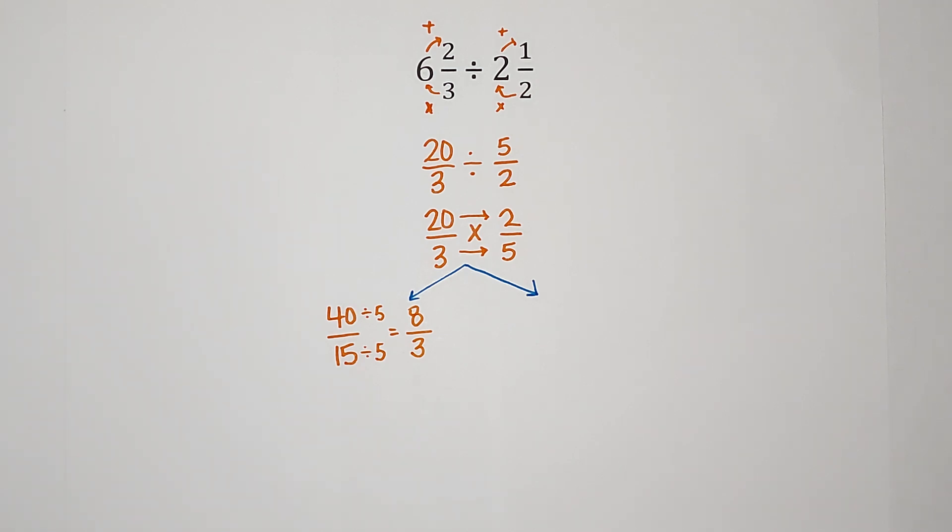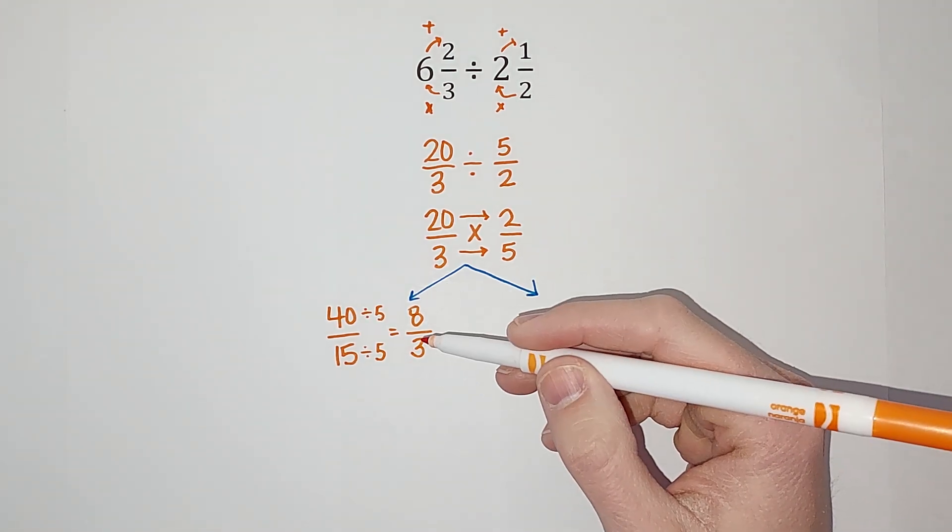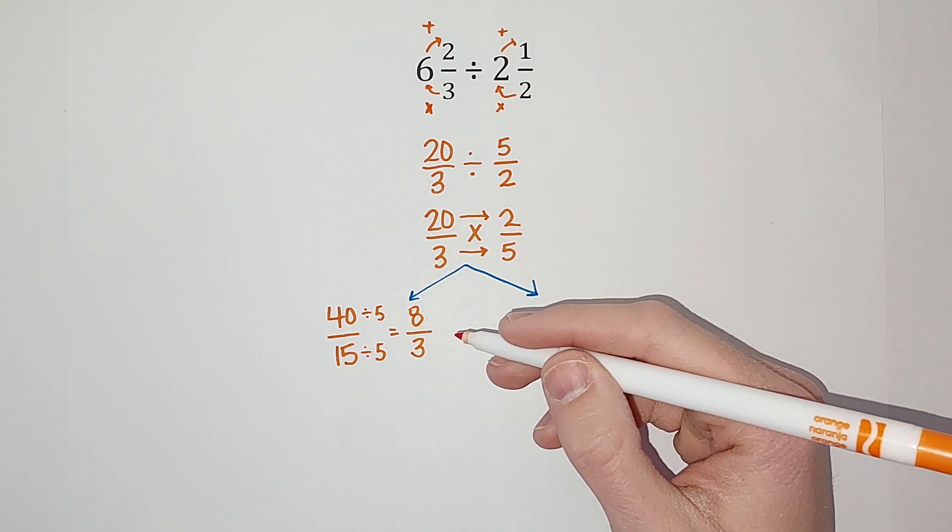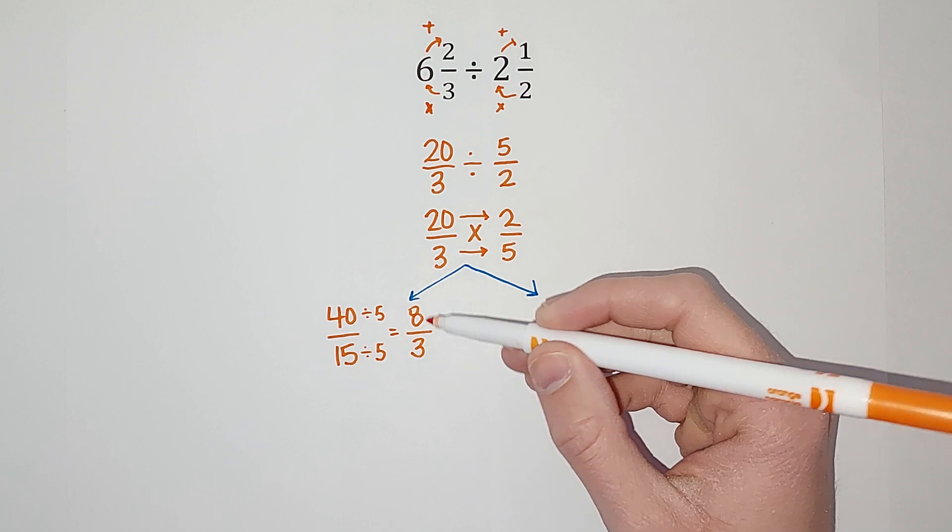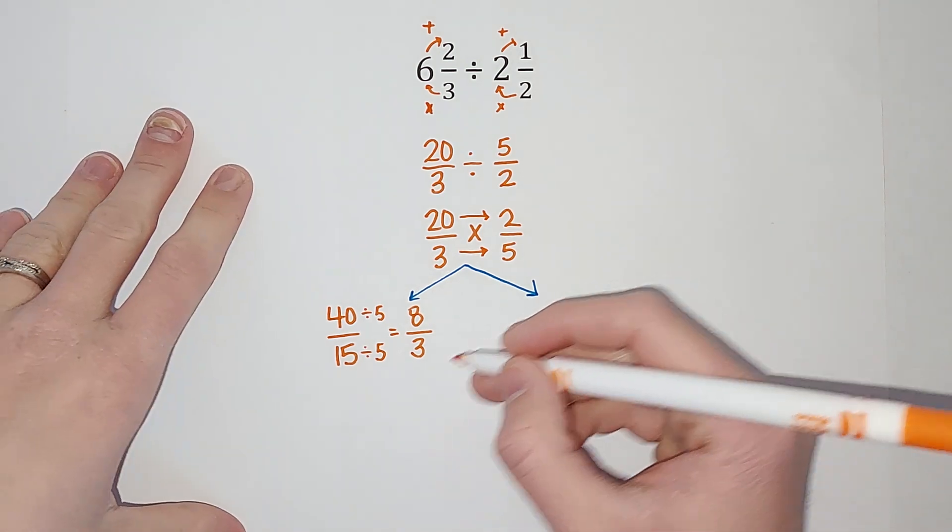So I have 8 thirds would be my answer. That is the answer as an improper fraction. If your teacher wants it as a mixed number we can turn it into a mixed number pretty easily.